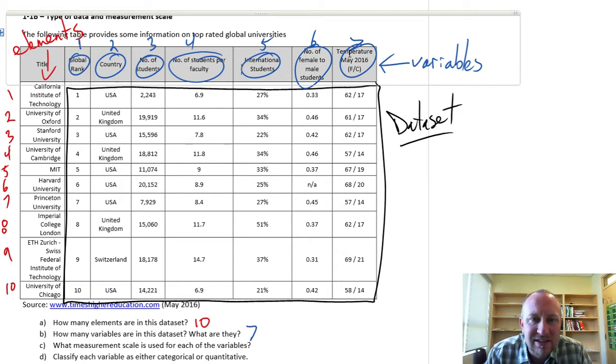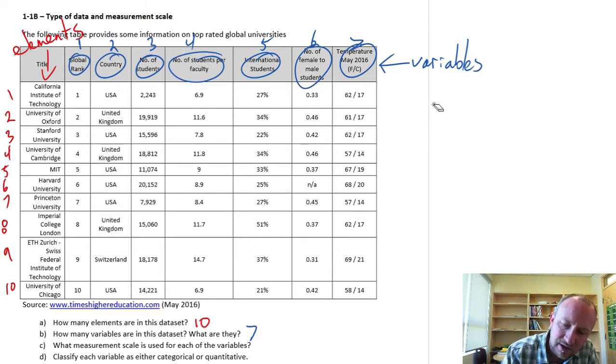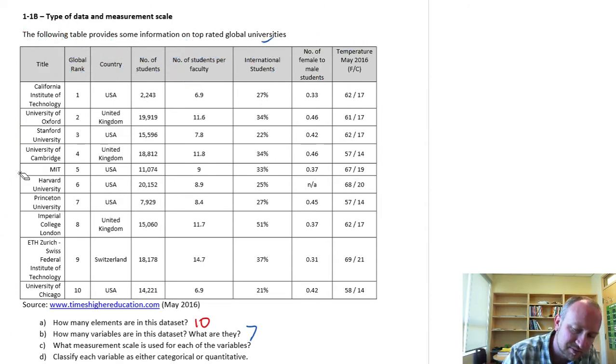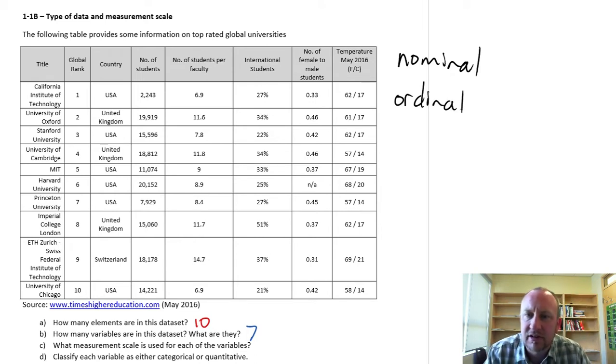Part C. What measurement scales are used for each of these variables? I'm just going to clear myself a little bit of space here. So you may recall our different types of measurement scales. The most basic is a nominal variable, just a label or a name. We have an ordinal variable, which has the characteristics of a nominal plus now the rank matters or the order of individual data points contains some meaning.